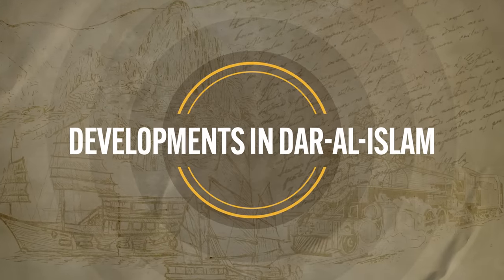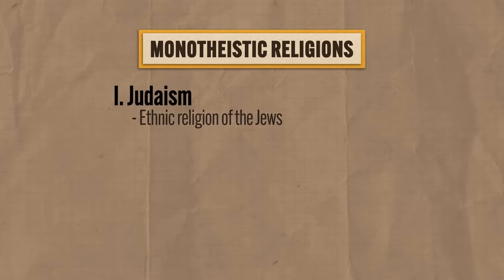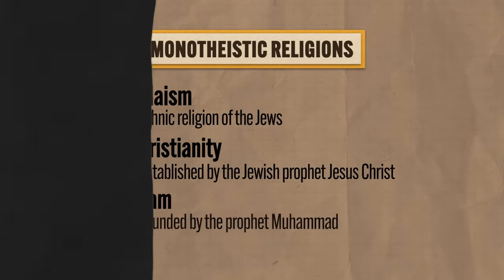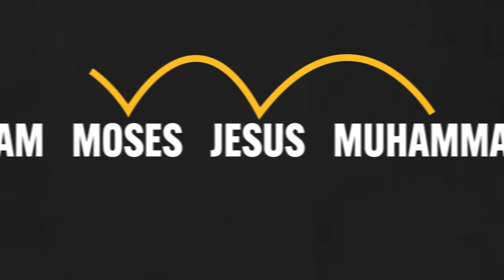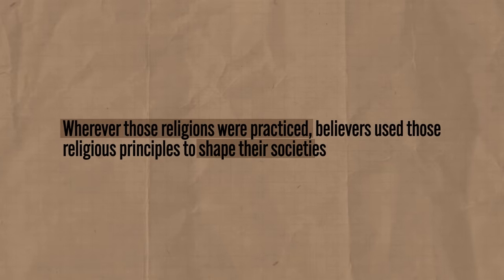Now let's check in with developments in Dar al-Islam during this period. Dar al-Islam translates as the House of Islam and refers to all the places where Islamic faith was the organizing principle of civilization. In the heartland of the Muslim faith, two other major religions were also practiced. First was Judaism, the ethnic religion of the Jews centered on the Torah and the Hebrew Bible. Second was Christianity, centered on the teachings of Jesus Christ, his life, death, and resurrection. Third was Islam, also related to Judaism and Christianity. The Prophet Muhammad claimed to be the final prophet in the line of God's messengers, and taught that salvation would be found in righteous action like almsgiving, prayer, and fasting. Each of these religions was monotheistic — believing in one God — and wherever they were practiced, believers used those principles to shape their society.